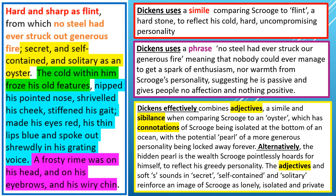Here are a few things you might want to look at. For example, the simile 'hard and sharp as flint' — Dickens compares him to flint to reflect his cold, hard, uncompromising personality. Flint is also something used to spark a fire; it's a weapon. So he's very unpleasant. We've got the phrase 'no steel had ever struck out generous fire,' meaning that nobody could ever manage to get a spark of enthusiasm or warmth from Scrooge's personality. Remember, by stave five that is really easy for the little boy outside. But even in stave two, straight after, when he goes back to his childhood he's crying, and when he sees old Fezziwig that warmth comes in. So as you're analysing this, think about which extracts you could be looking at later on.